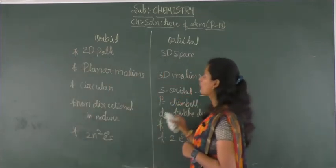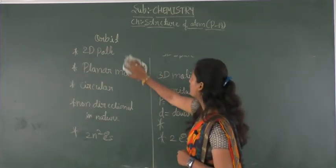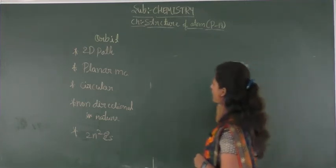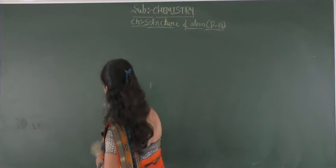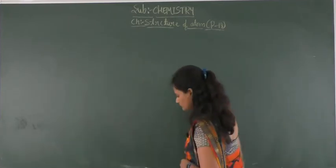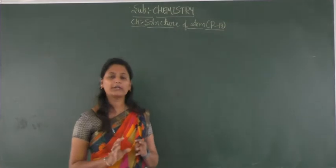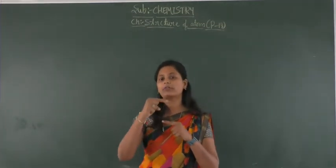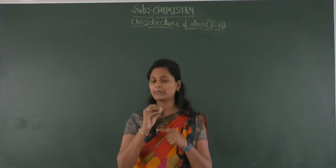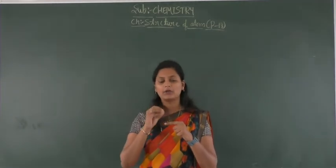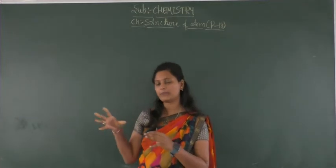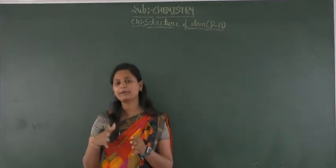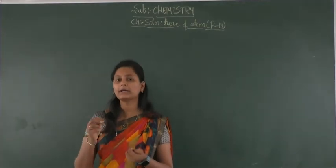Now we will move to quantum numbers. In quantum mechanics, we are going to find the probability of finding an electron in an atom. By using quantum mechanics, we are able to find the electrons which are present in the atoms.